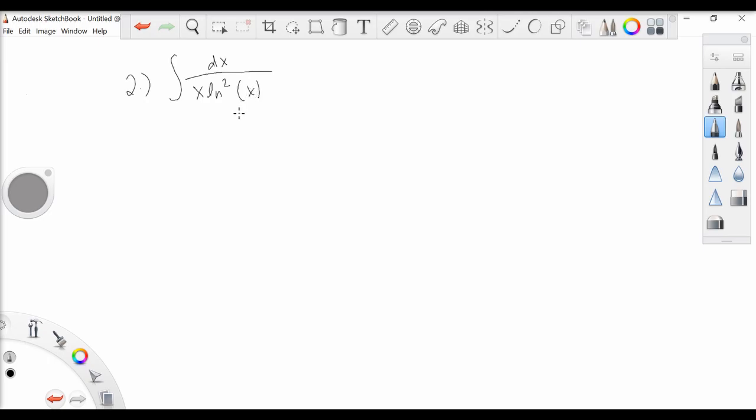This is a slightly more difficult looking integral, but if we take the idea of looking for an expression and that expression's derivative, then we can break this up. This is really two parts: one over x times one over the natural log of x squared.